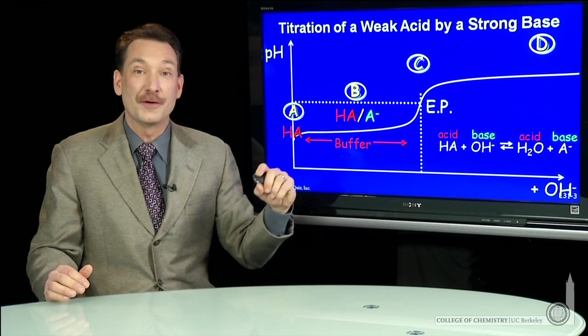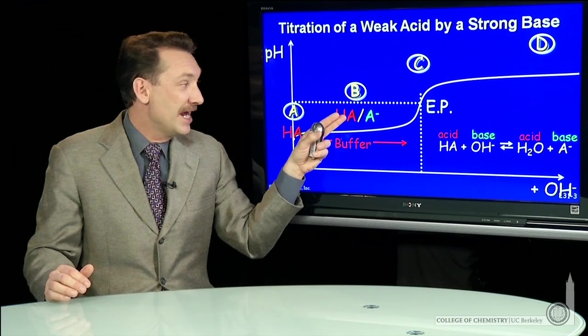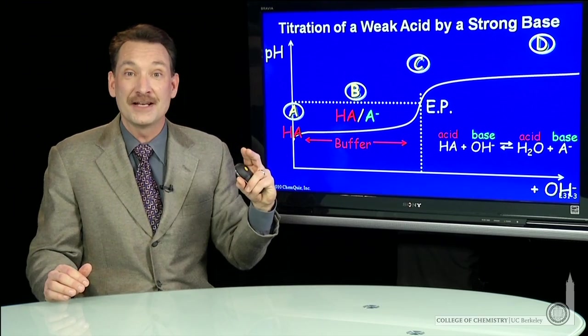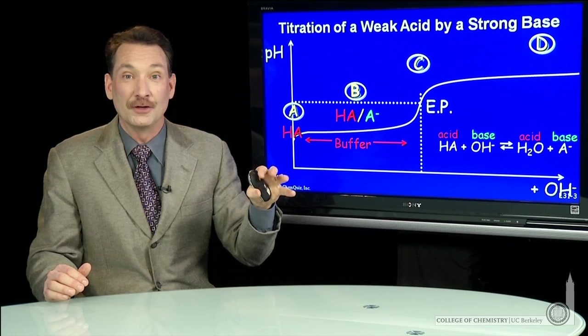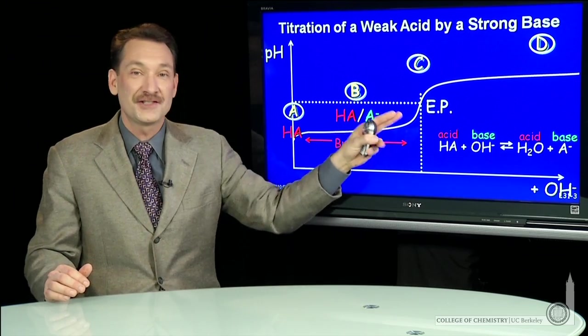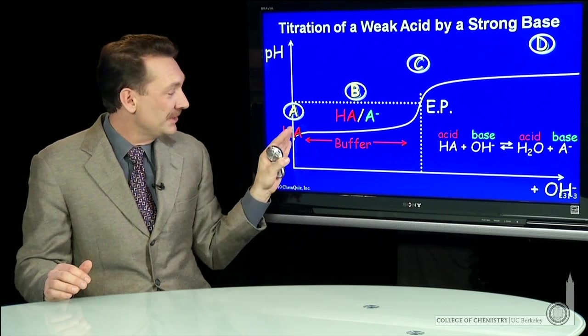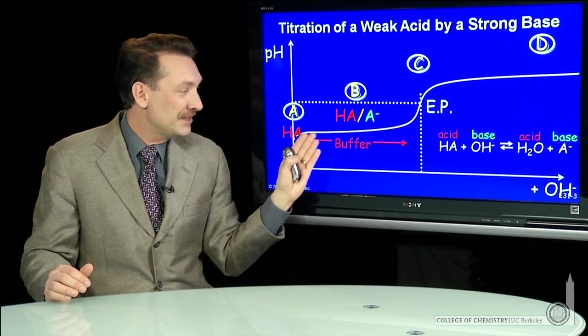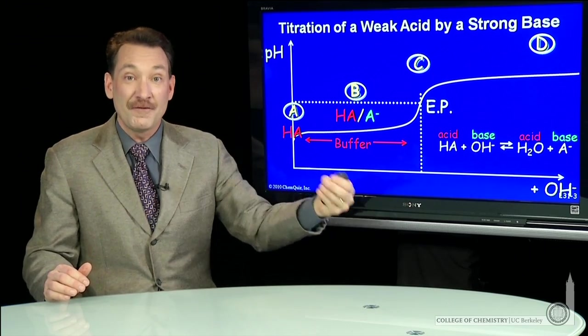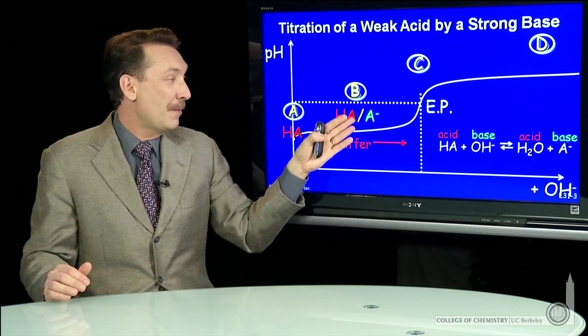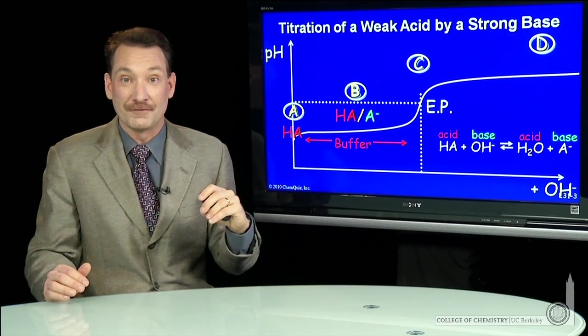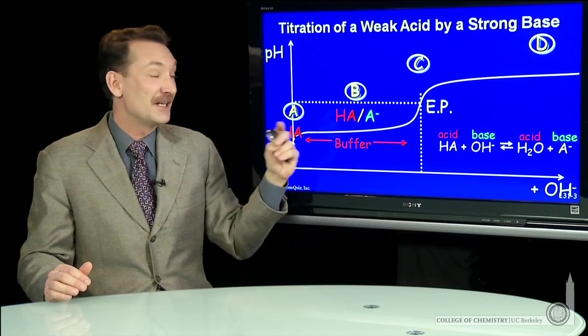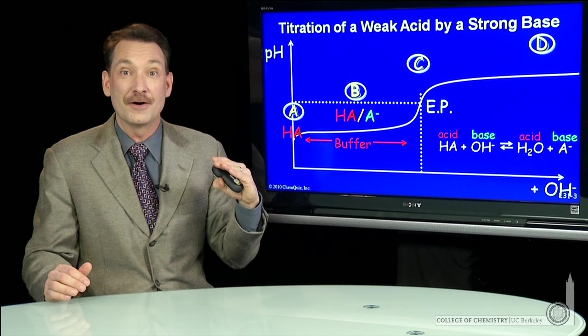This region is called the buffer region. When HA and A minus concentrations are about equal, the solution resists changes in pH, and you can see the line is relatively flat. This resistance to pH change is called buffering, and the property of weak acids to act as buffers is very important. We'll spend an entire lesson on buffers.